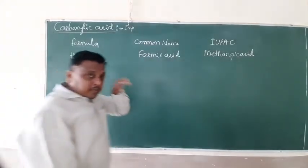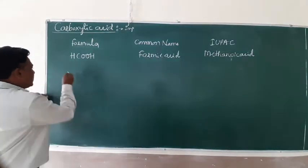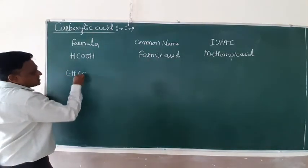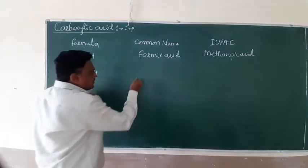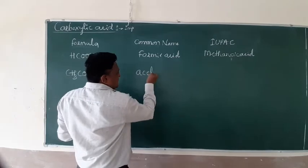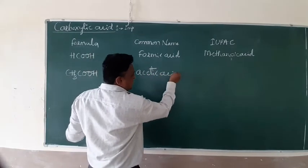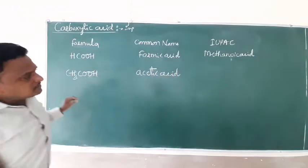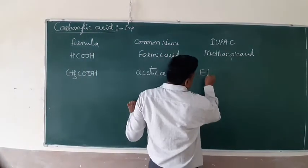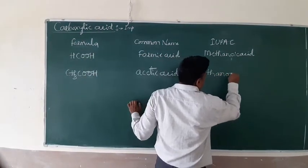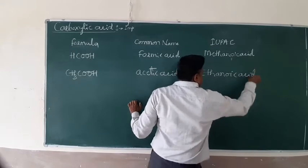And second one, CH3COOH. They are coming from acetic acid or vinegar. We call it as acetic acid. This is acetum or vinegar or acetic acid. Two carbon is known as ethanoic acid.